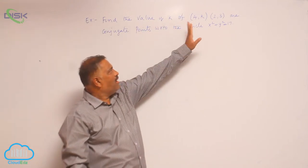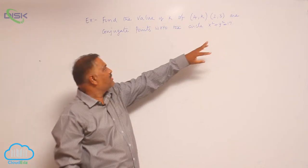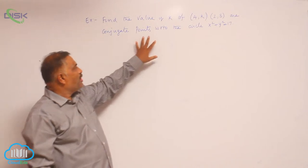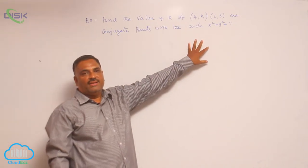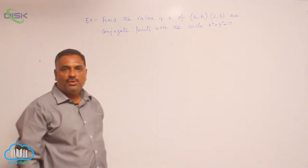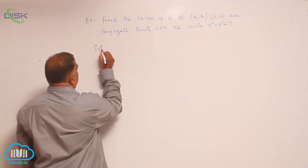Find the value of k if (4, k) and (2, 3) are conjugate points with respect to the circle x² + y² = 17. Now, solution.